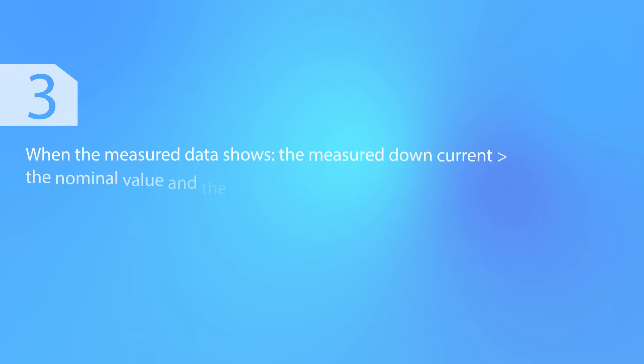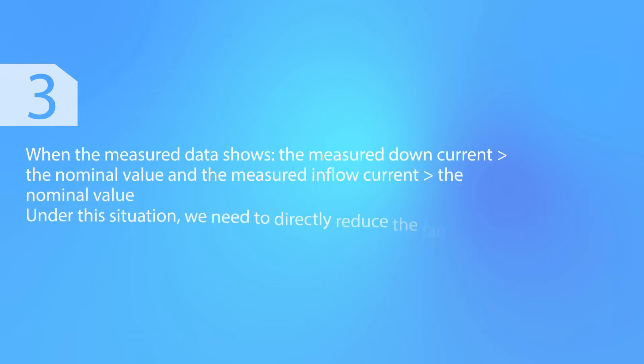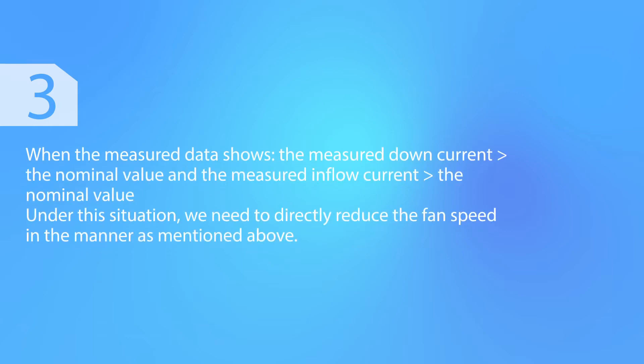When the measured data shows that the measured down current is above the nominal value and the measured inflow current is also above the nominal value, we need to directly reduce the fan speed in the manner as mentioned above.